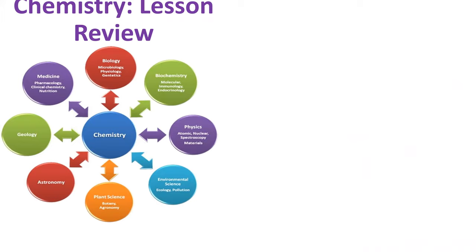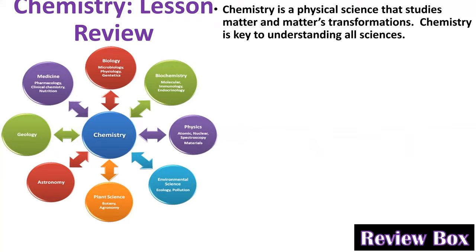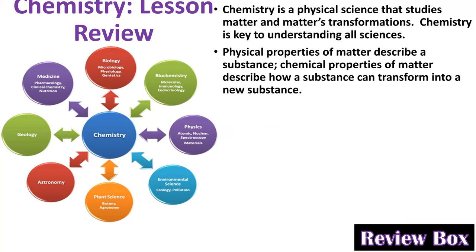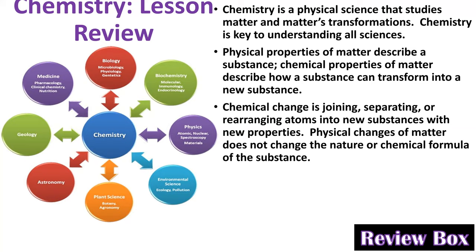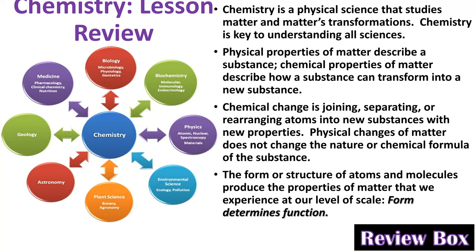Review: Chemistry is a physical science that studies matter and matter's transformation. Chemistry is key to understanding all sciences. Physical properties of matter describe a substance. Chemical properties describe how a substance can transform into a new substance. Chemical change is joining, separating, or rearranging atoms into new substances with new properties. Physical changes do not change the nature or chemical formula of a substance. The form or structure of atoms and molecules produces the properties of matter that we experience at our level of scale — form determines function.